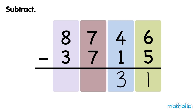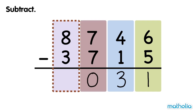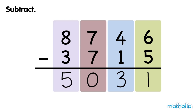Subtract the hundreds. 7 hundreds minus 7 hundreds equals 0 hundreds. Subtract the thousands. 8 thousands minus 3 thousands equals 5 thousands. 8,746 minus 3,715 equals 5,031.